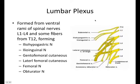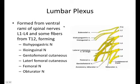The lumbar sacral plexus is really two plexuses — a lumbar one and a sacral one. They're discussed together because they're really somewhat continuous. The lumbar plexus is made up primarily from L1, L2, L3, L4, L5, and some contribution from T12. It's formed from the ventral rami of spinal nerves L1 through L4, and some fibers from T12. The nerves they form are the iliohypogastric, ilioinguinal, genitofemoral, lateral femoral cutaneous, femoral nerve, and the obturator nerve.